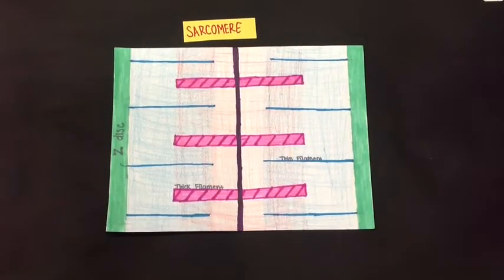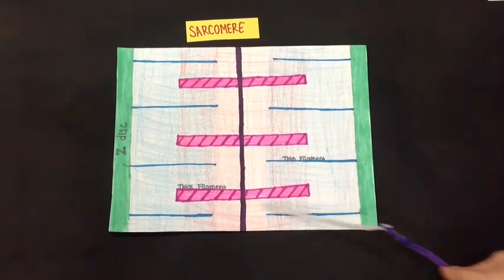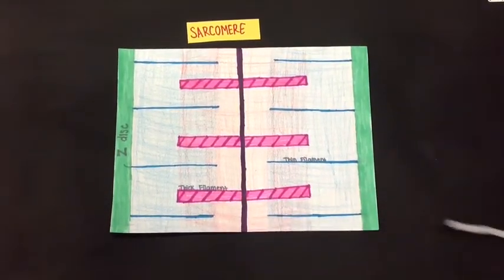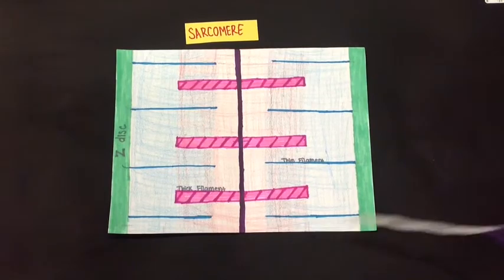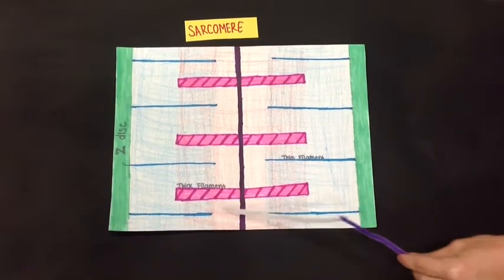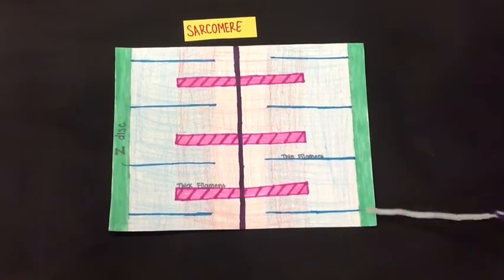Thick and thin filaments overlap to form dark A bands. Thin filaments alone form light I bands. The H band within the A band is where there is no overlap. The Z line is a dark line within the I bands.